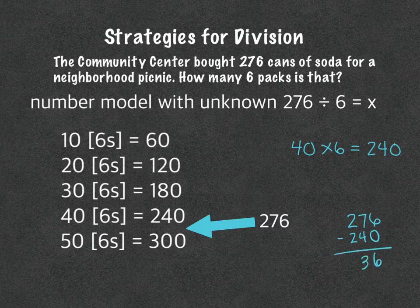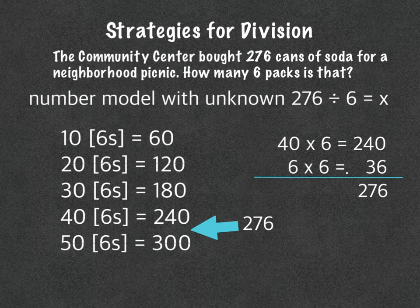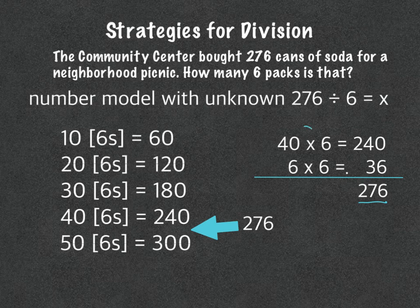So we end up with 36. Then we think about how many sixes go into 36. We knew that 40 was the number of six-packs we could definitely fit in, and we had 36 left over. Six sixes go into 36. So now we have 240 and 36, which adds up to 276 — our target number. It went in 40 times and then 6 more times, so 40 plus 6 is 46.